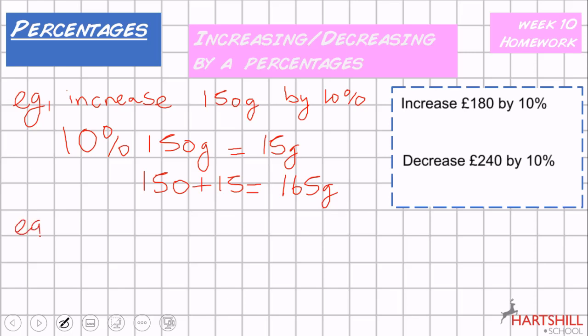Example 2, if I want to decrease by 10%, again, we know that 10% of 150 grams equals 15 grams. And rather than adding it on, we're decreasing, so we take it away. So it'll be 150, take away 15, which will give you 135 grams.